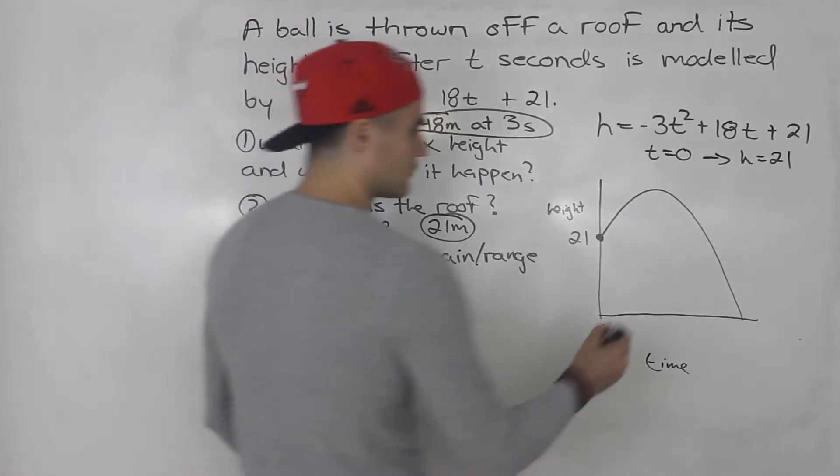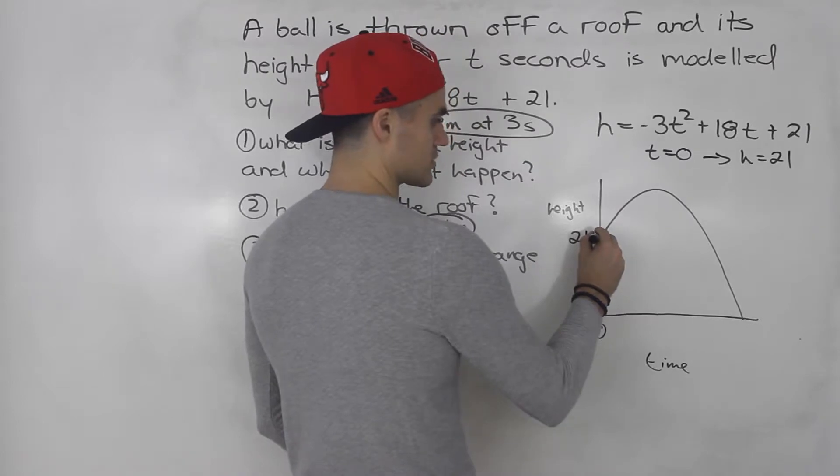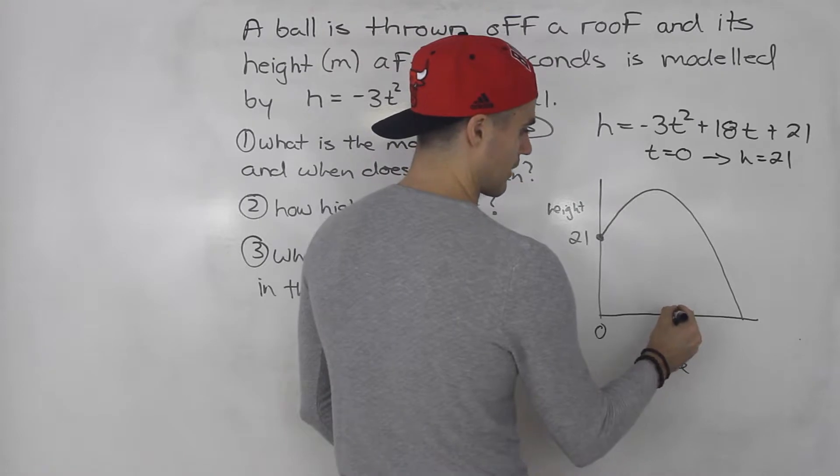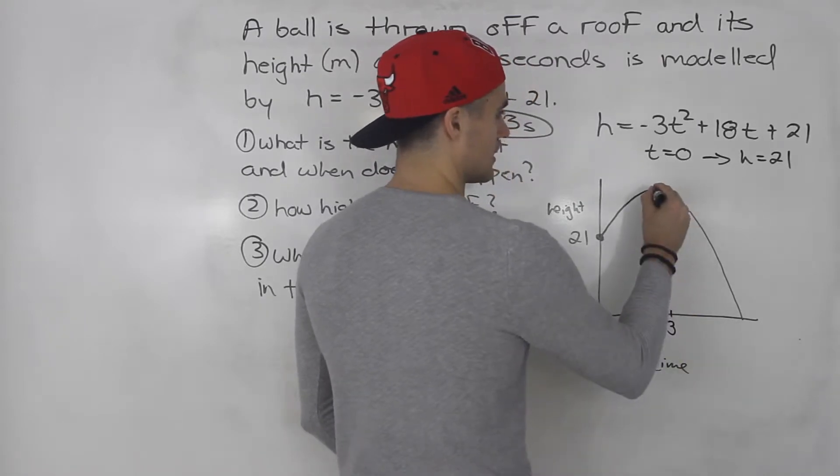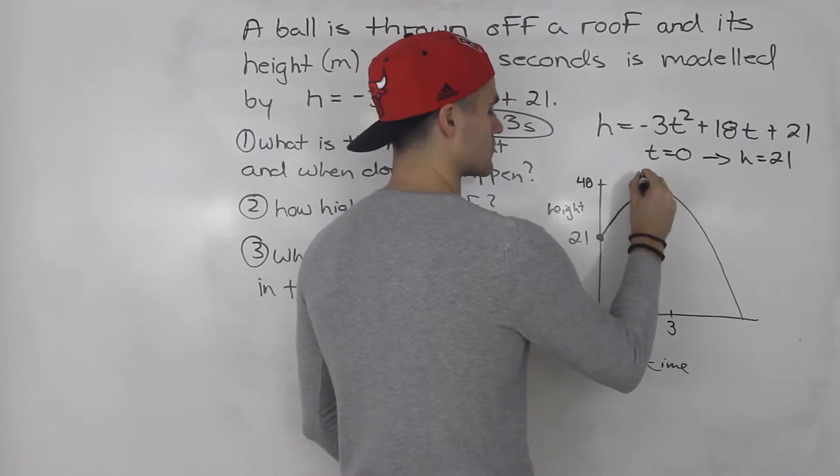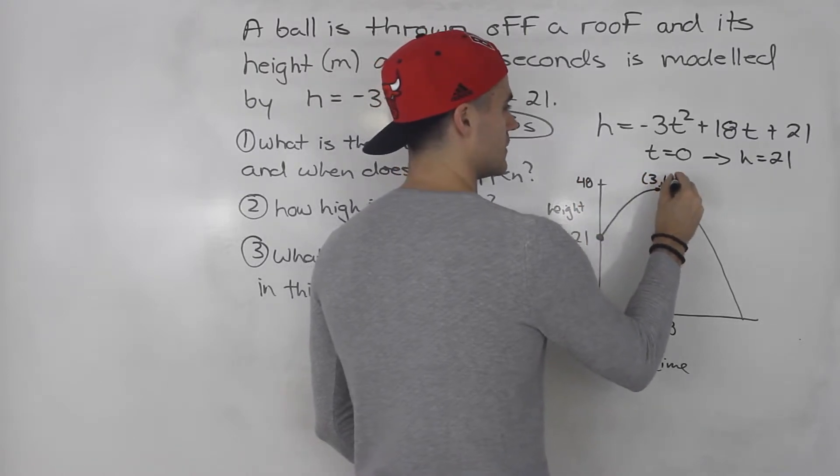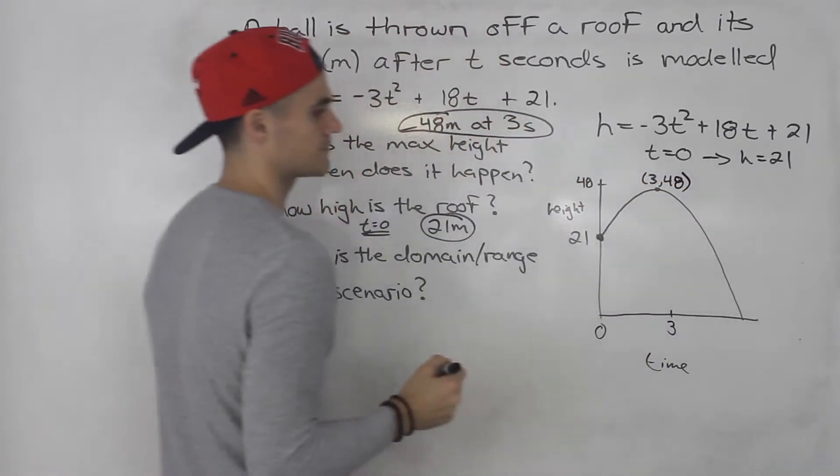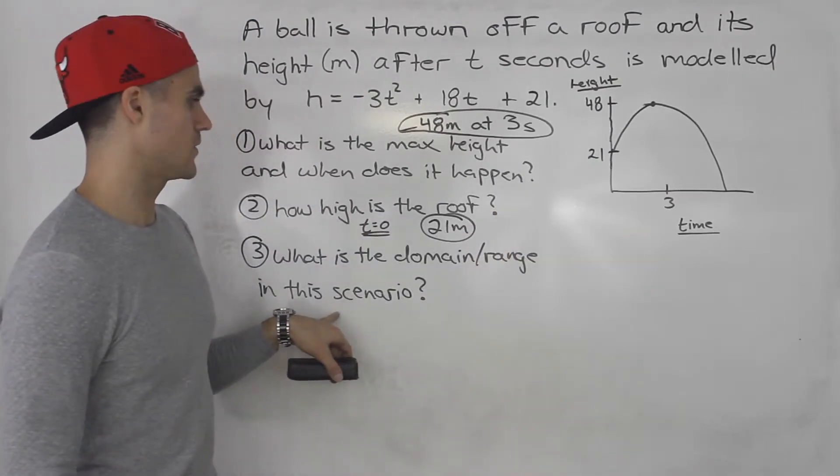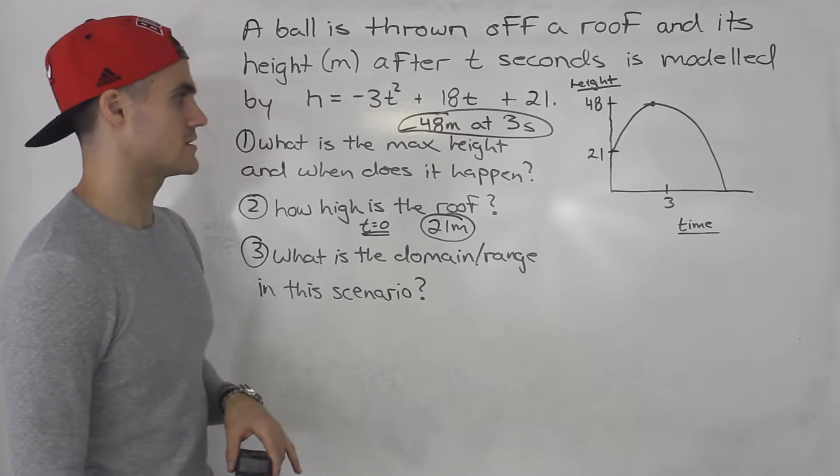So far we know it's thrown off a roof that's 21 meters high. And then at three seconds, it reaches a max height of 48, right? The vertex is at 3 and 48. So now that we have this diagram drawn out, let's go to number three. What is the domain and range in this scenario?